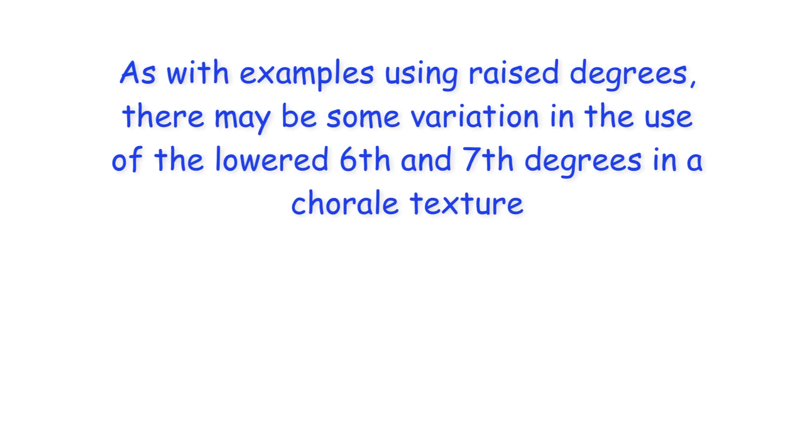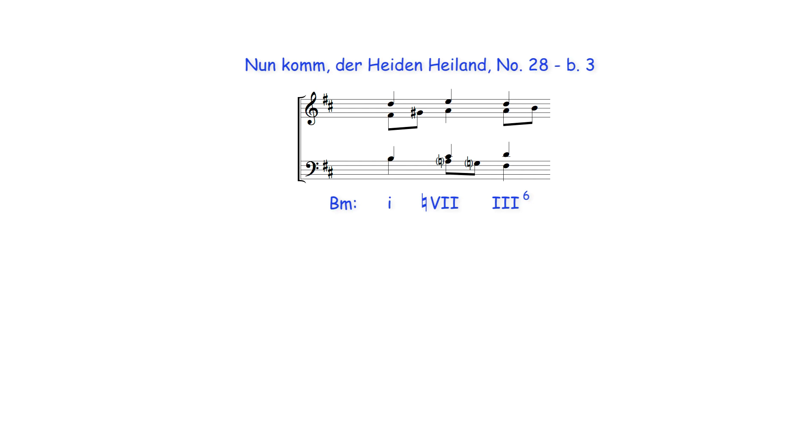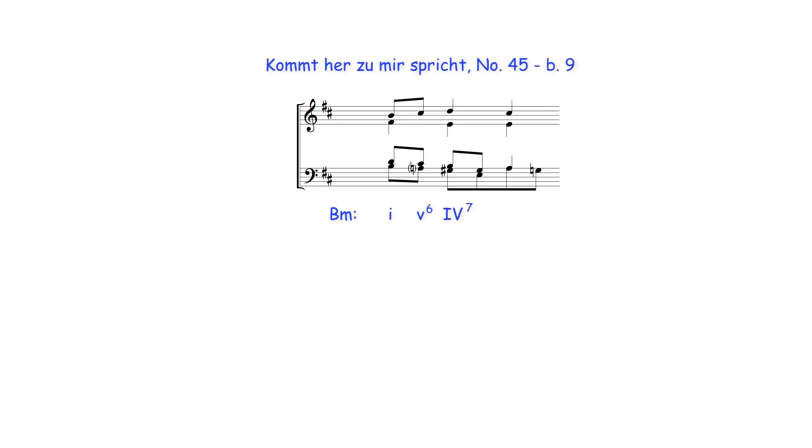As with examples using raised degrees, there may be some variation in the use of the lowered sixth and seventh degrees in a chorale texture. For example, only one of the degrees may be harmonized with the other taken as a passing note. And they may include one raised degree.